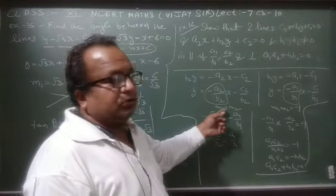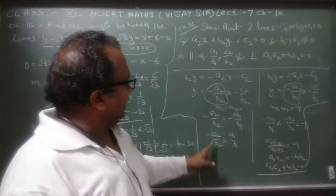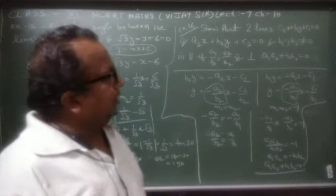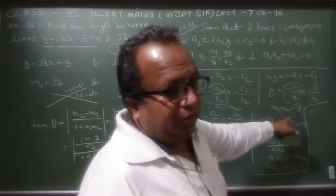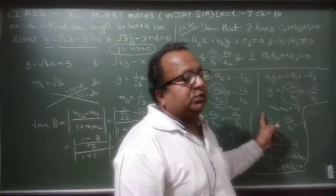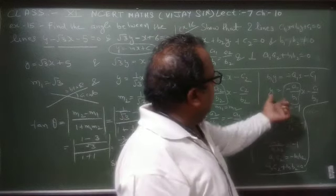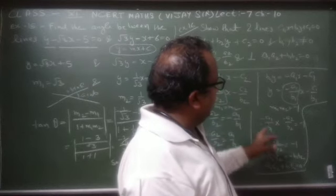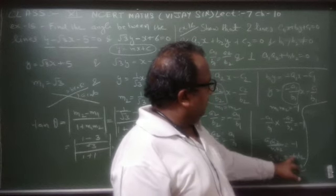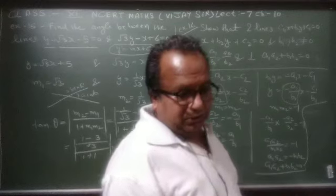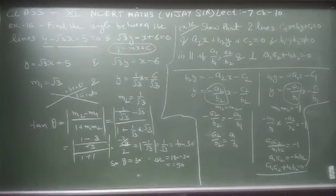Lines parallel कब होती हैं — जब दोनों के slopes equal हों। m1 = m2 रखा: -a1/b1 = -a2/b2। Minus से minus cut हो गया तो required condition मिली: a1/b1 = a2/b2। Perpendicular के लिए condition है m1 × m2 = -1। m1 और m2 की values put की — दोनों तरफ minus positive हो गया — cross multiply करने पर a1a2 + b1b2 = 0 required condition आई।